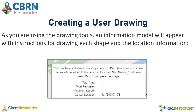If you ever forget or need a refresher while drawing a specific shape, once you select the tool an information modal will appear at the bottom of the map with instructions for drawing the shape, as well as location information such as the area, perimeter, and cursor location.